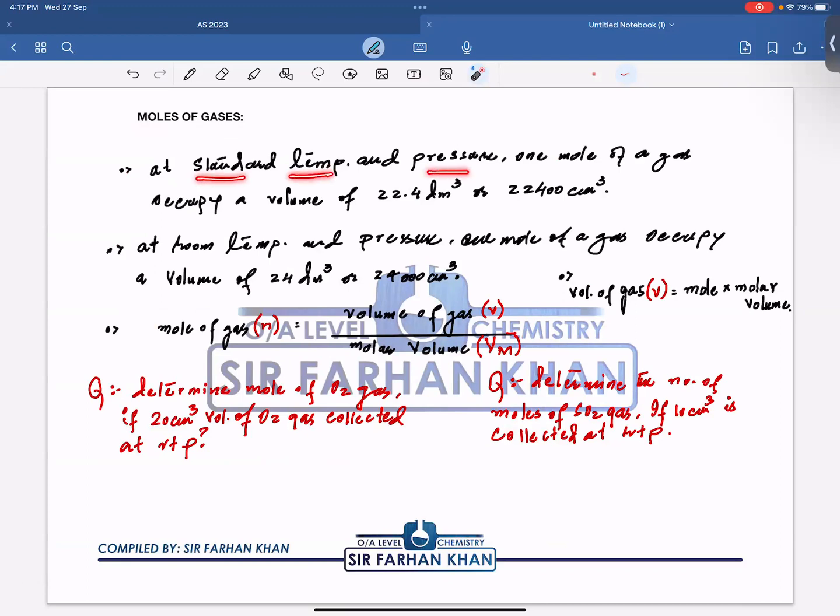One is standard temperature and pressure, and we write this standard temperature and pressure in chemistry. All right. So remember, at STP, one mole of any gas occupies a volume of 22.4 dm³. This value is fixed. You can use this in the exam. In centimeter cube, it's going to be 22,400.